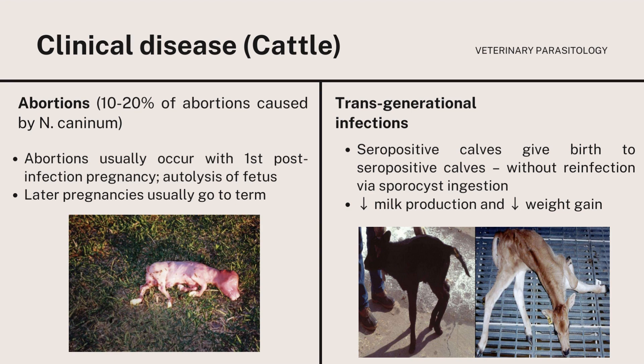One of the clinical diseases in cattle is abortions, with 10 to 20% of abortions caused by Neospora caninum. Abortions usually occur with the first post-infection pregnancy. Autolysis of the fetus occurs and later pregnancies usually go to term but calves are infected. In transgenerational infections, seropositive calves give birth to seropositive calves without reinfection via oocyst ingestion. Lower milk production and lower weight gain are also observed.